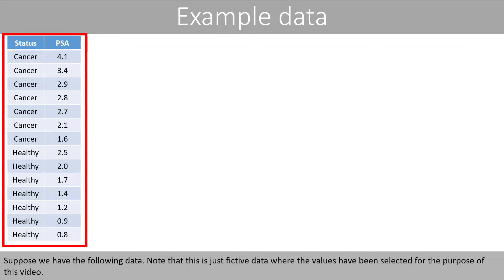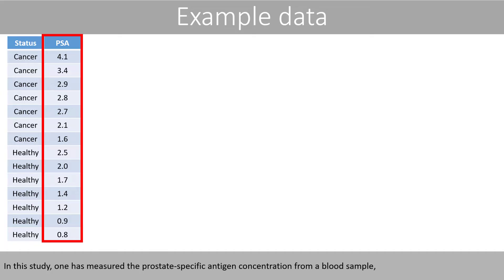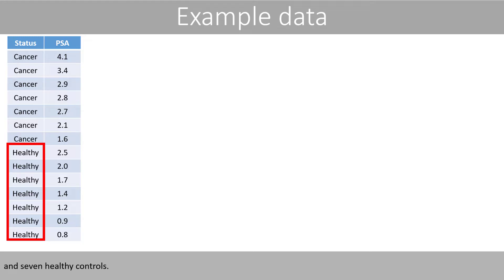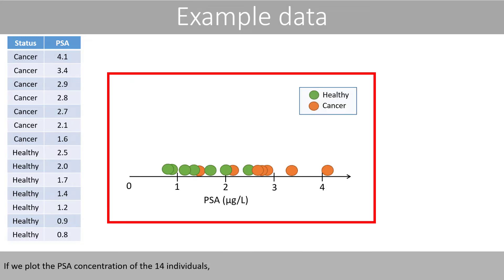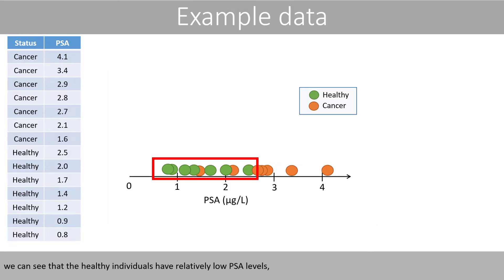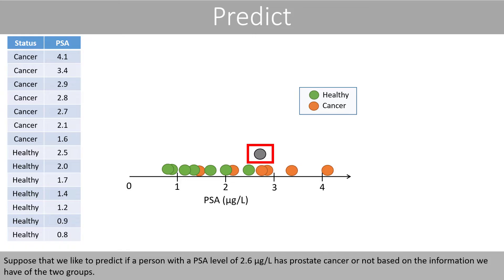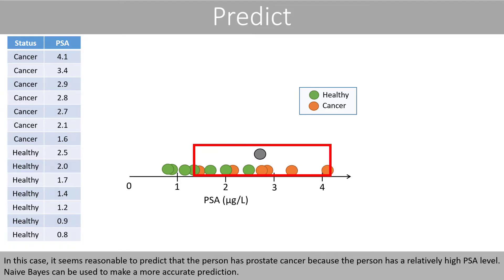Suppose that we have the following data. Note that this is just fictive data where the values have been selected for the purpose of this video. In this study, one has measured the prostate-specific antigen concentration from a blood sample in seven patients with prostate cancer and seven healthy controls. If we plot the PSA concentration of the 14 individuals, we see that the healthy individuals have relatively low PSA levels compared to the patients with prostate cancer. Suppose that we like to predict if a person with a PSA level of 2.6 has prostate cancer or not, based on the information we have of the two groups.